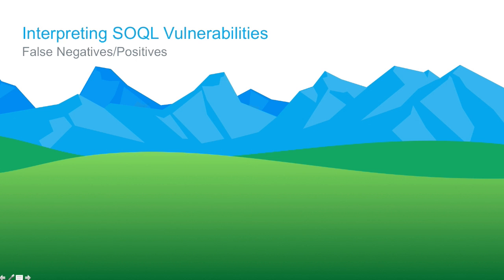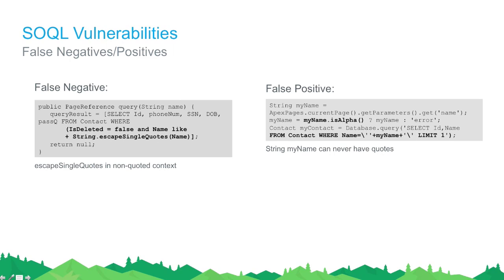Regarding false negatives: if escapeSingleQuotes is used in a non-quoted context, the scanner sees it and thinks the input is sanitized when it actually isn't. That's a false negative. A false positive, on the other hand, occurs if you perform user input sanitization in a non-standard way the scanner doesn't understand — for example, an isAlphaNumeric check. The scanner flags that as vulnerable even though it isn't. They happen occasionally, but you can verify them through manual testing.